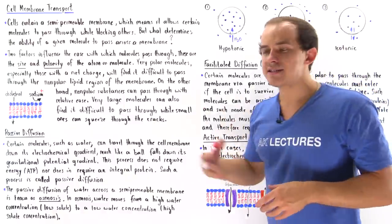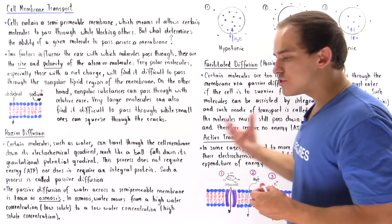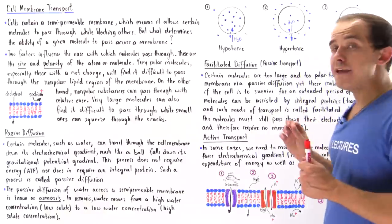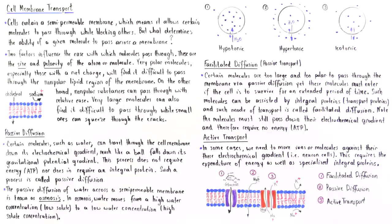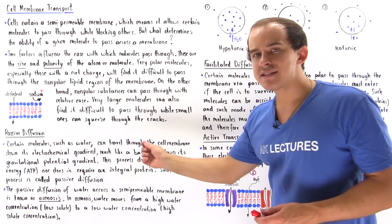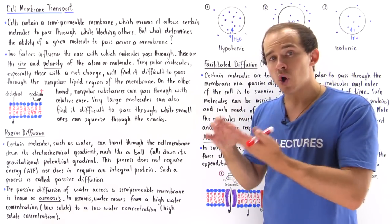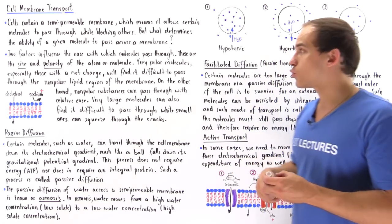In an isotonic solution, the solute concentration inside and outside the cell is exactly the same. Water still moves across the cell membrane in both directions, but there is no net movement — the two rates are equal. The shape and size of the cell remain the same. This type of transport is passive diffusion: no energy, no integral protein, and molecules move down the electrochemical gradient.